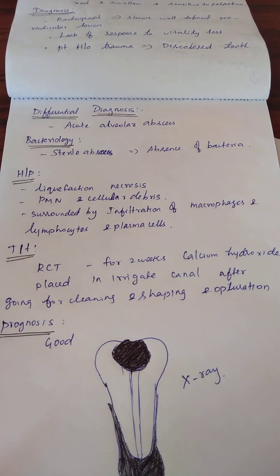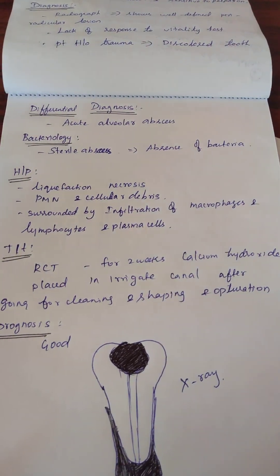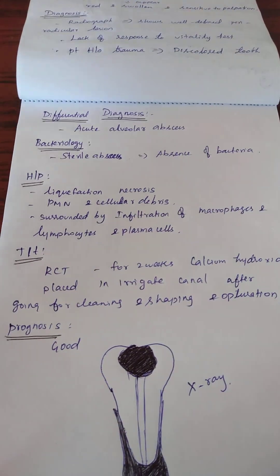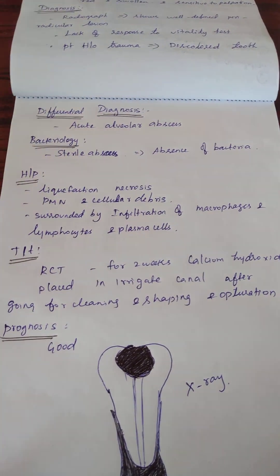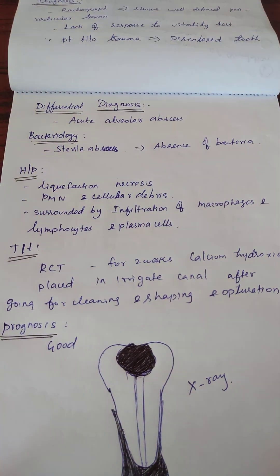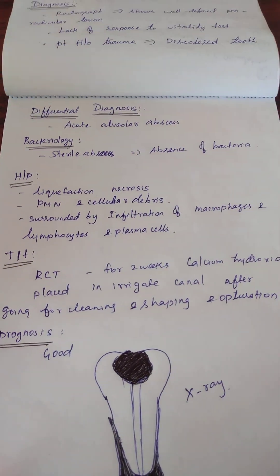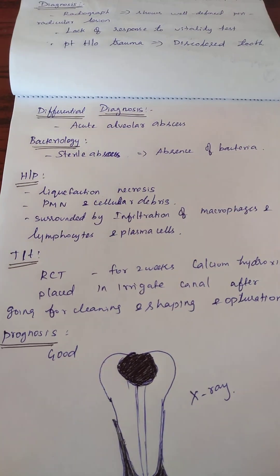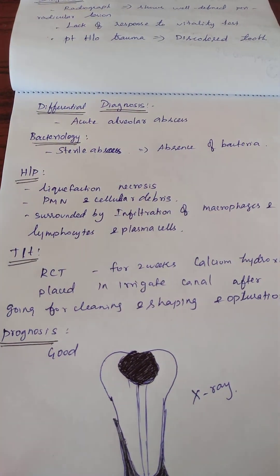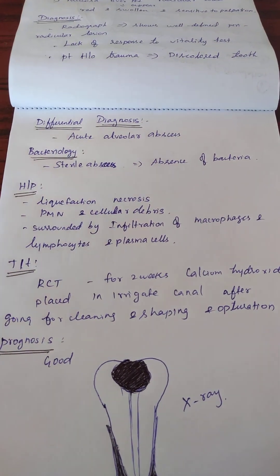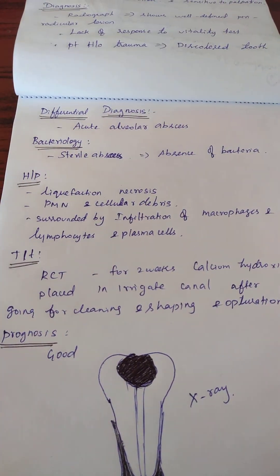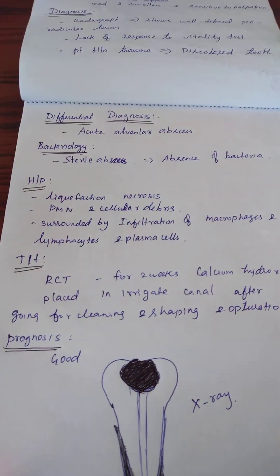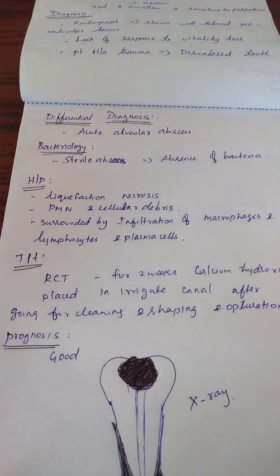Histopathology: liquefaction necrosis is present, with polymorphonuclear neutrophils and cellular debris surrounded by infiltration of macrophages, lymphocytes, and plasma cells. Bacteriology: most abscesses show microbial infection, but most periradicular lesions produce a so-called sterile abscess, except when transient bacteria are present.